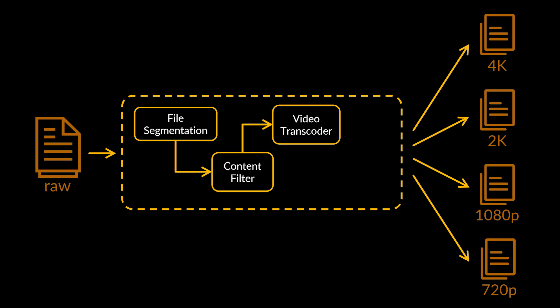Next is transcoding — a process in which the original data is decoded to an intermediate uncompressed format, then encoded into the target format. This results in a smaller file size and a much more optimized format for target devices. The last step of the processing pipeline is quality conversion, which handles the conversion of the transcoded media into different resolutions such as 4K, 1080p, and 720p — allowing us to fetch the desired quality as per the user's request.